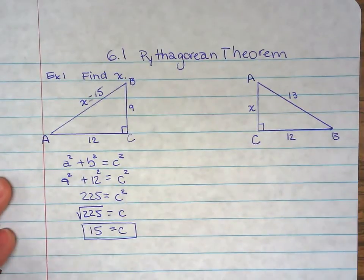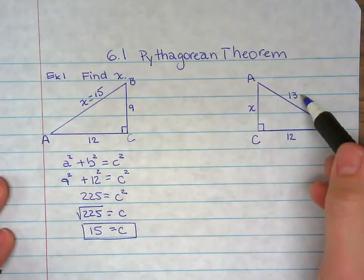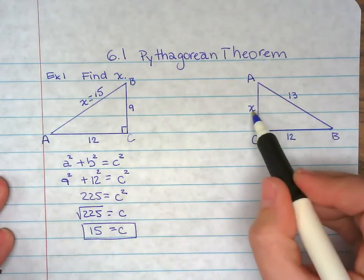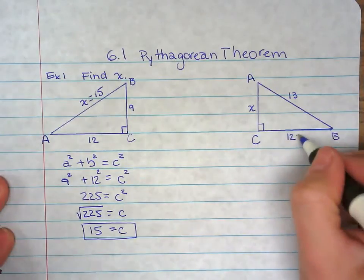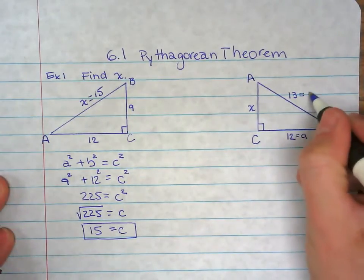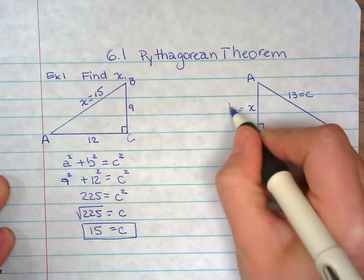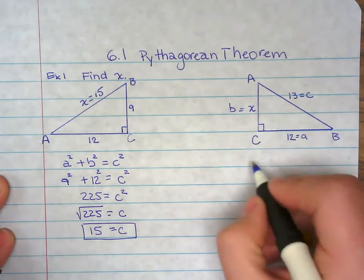Now the other example. We do have c, we're looking for b or x right here. So this one is a, this one is c, and x is b.